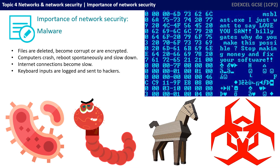When a worm infects a computer, the internet connection may become slow as the worm searches online for other computers to infect. However, the worst symptoms of malware are often the ones that you do not see. Malware can be designed to simply record the keys that you press on your keyboard — for example, creating a text log that your computer then sends to a hacker periodically.